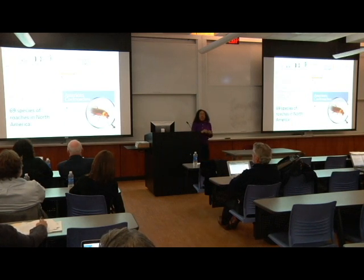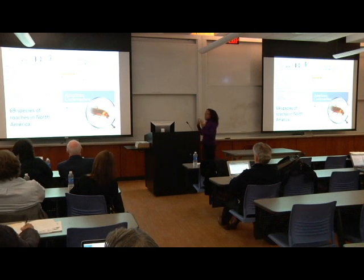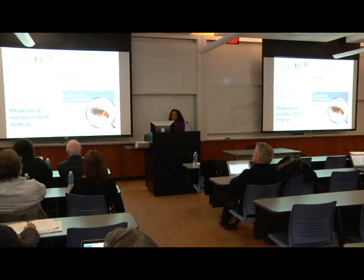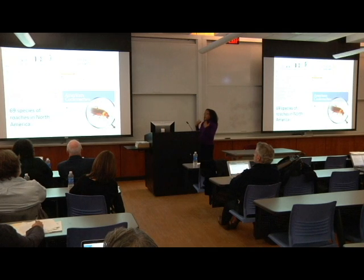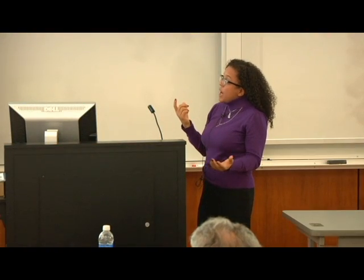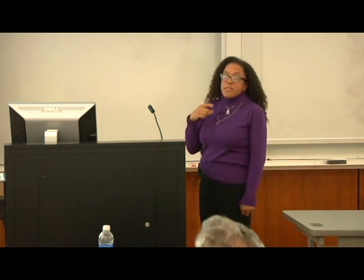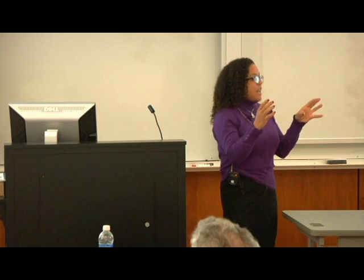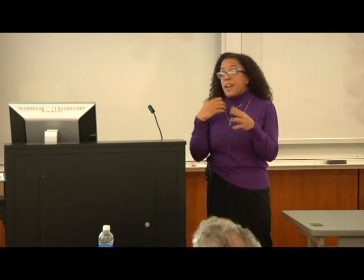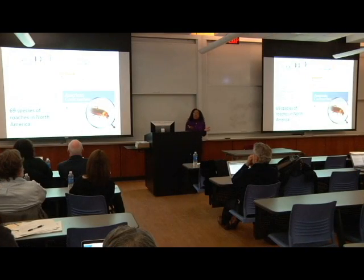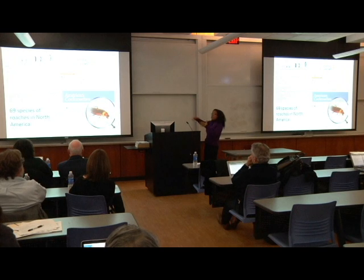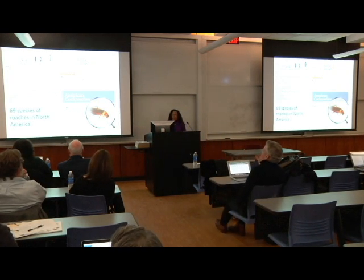Within North America alone, we have 69 different species of cockroach. The majority of the ones we think of as nasty pests are things like the German cockroach, the brown-banded cockroach, and the American cockroach. The common names of these cockroaches are usually associated with whatever cultural group was seen as negative at the time when that cockroach first became a pest problem. So the German cockroach is called that here, but in Germany it's called the Polish cockroach. The common name varies and probably has cultural significance.